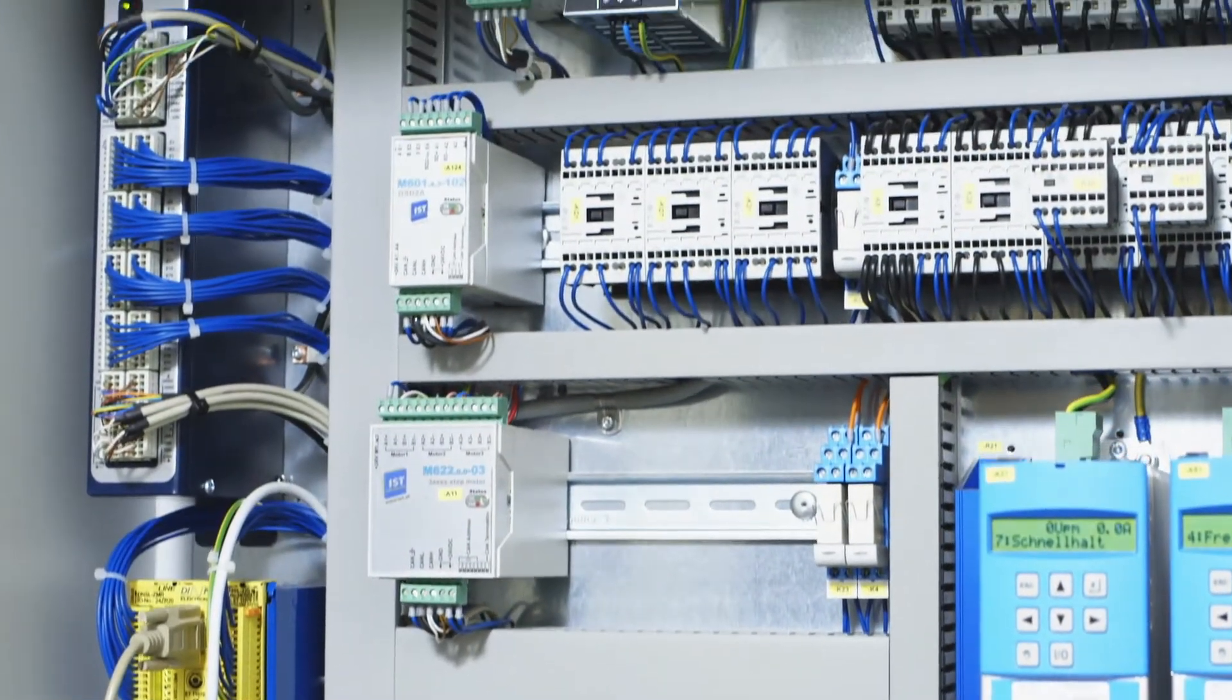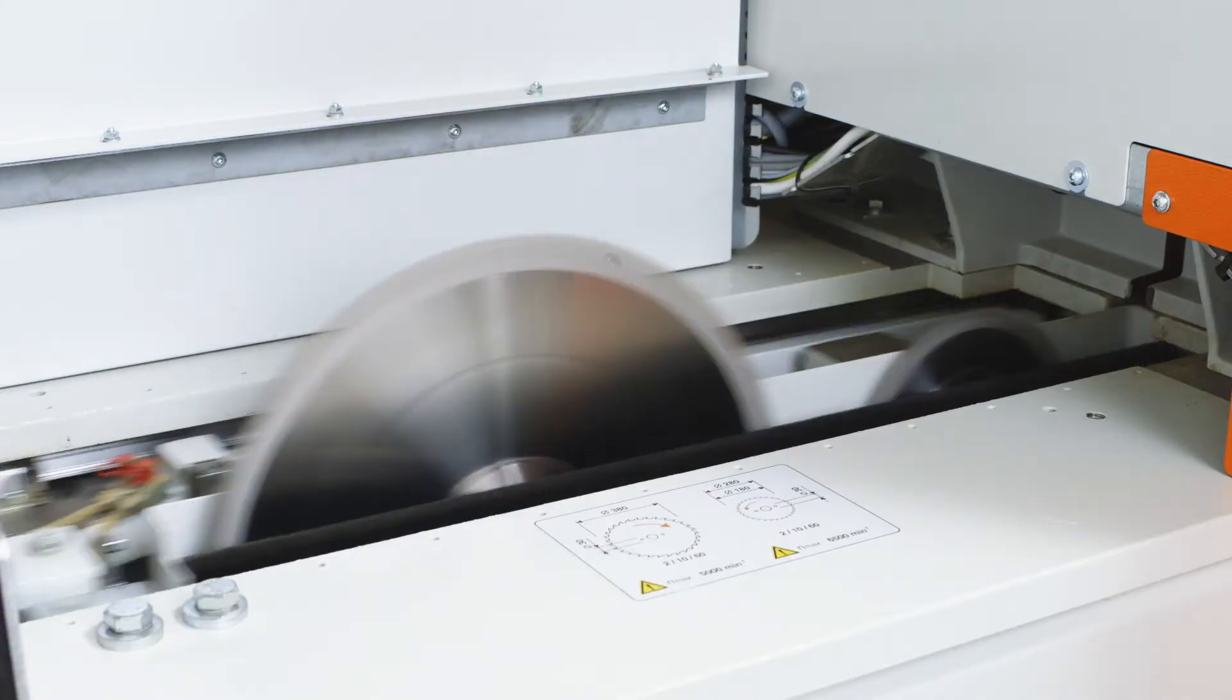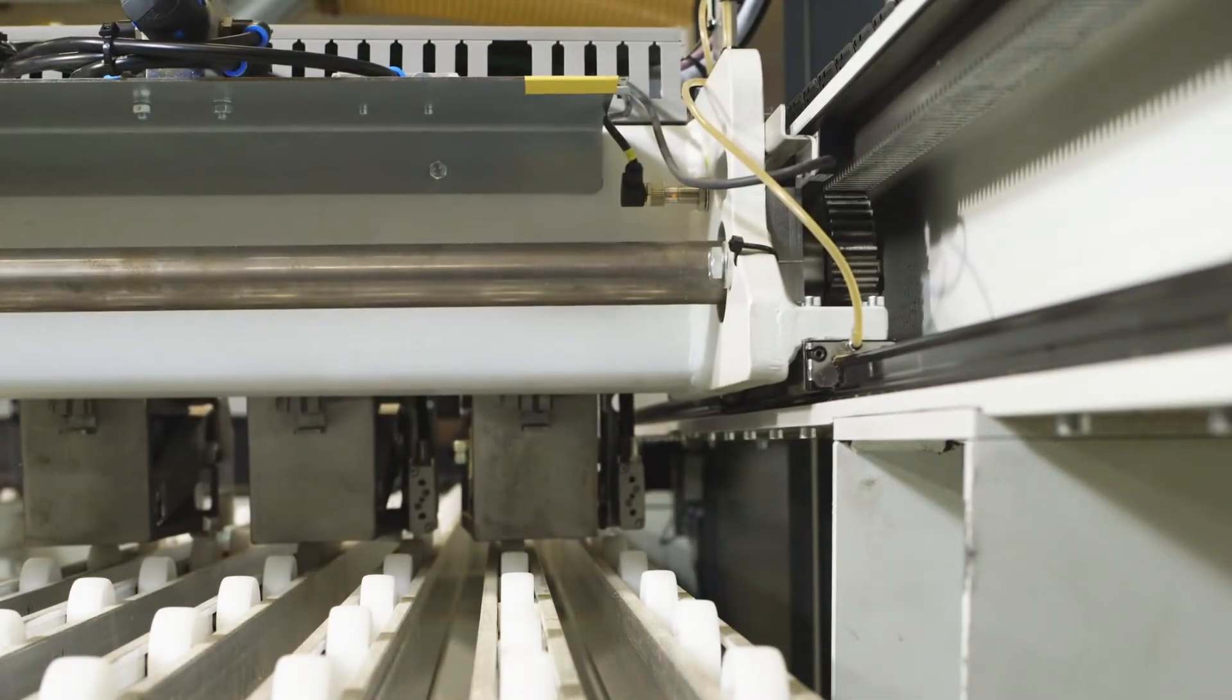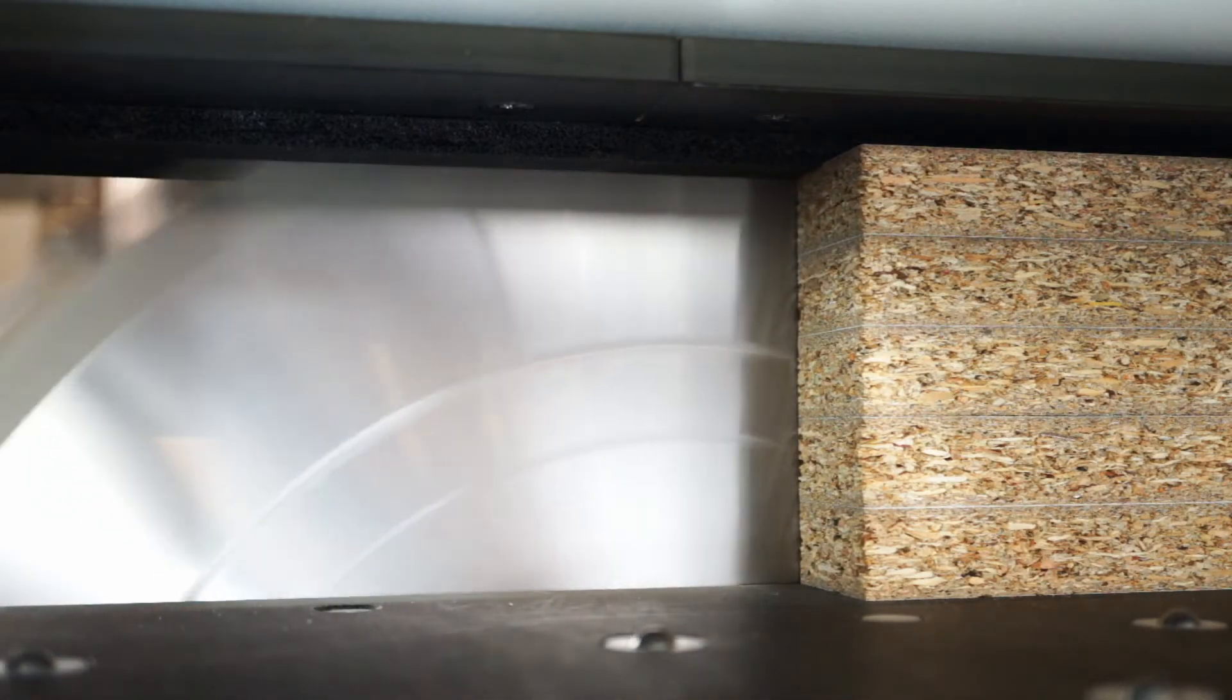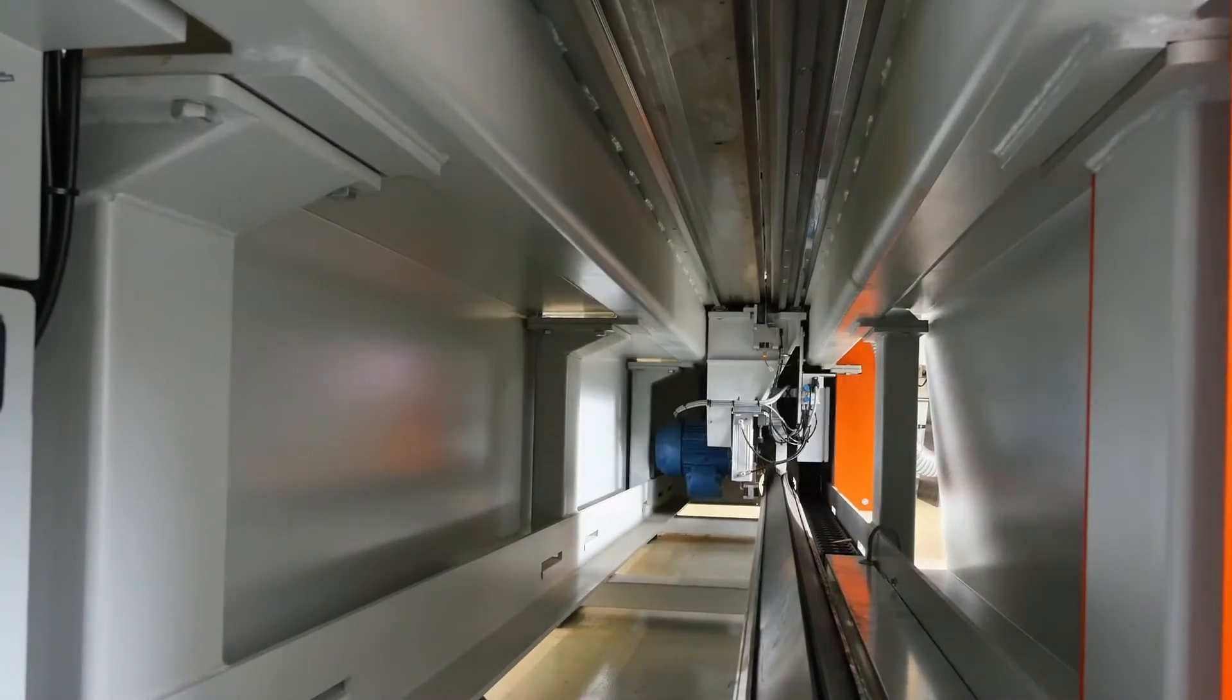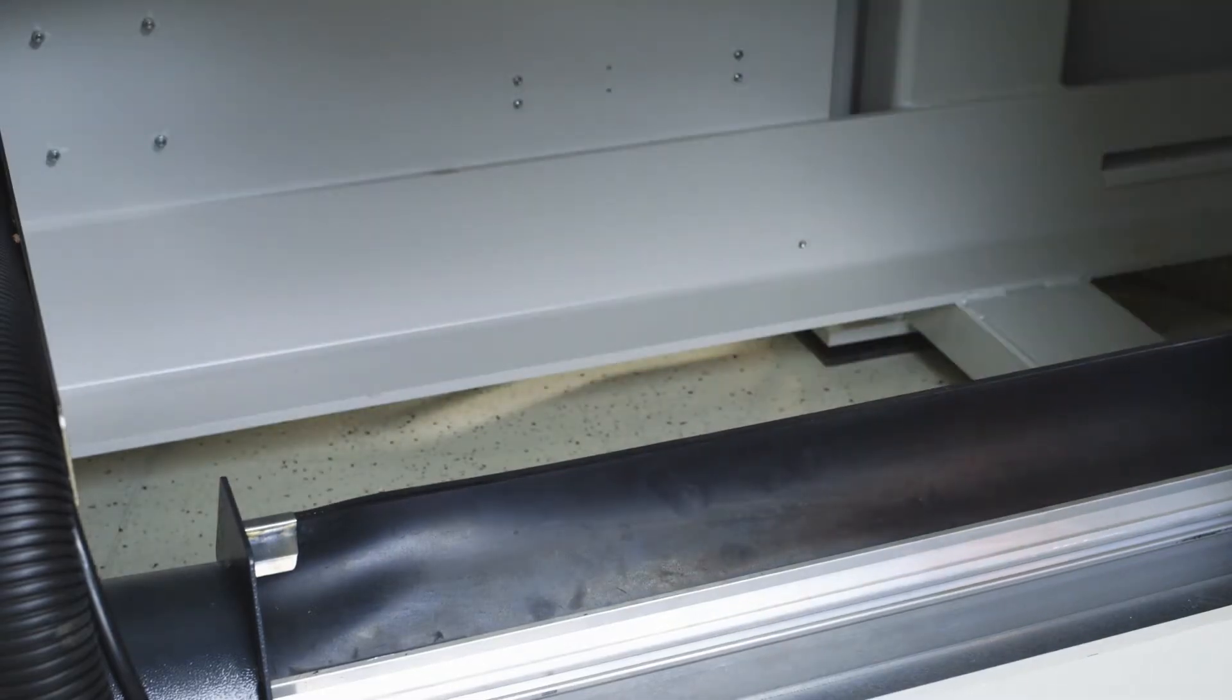Our saw motors with output rates of up to 15 kilowatts, numerically controlled pre-scoring saw with tool data store and saw blade protrusion of 95 millimeters easily cut through entire stacks of panels. In combination with steep acceleration ramps and infinitely controllable feed rates of up to 130 meters per minute, this ensures enormous machine dynamics.